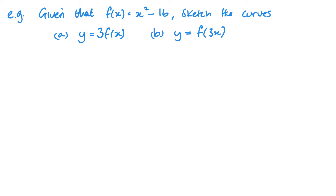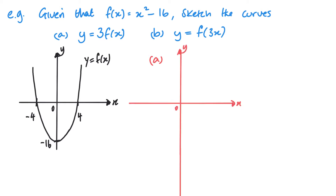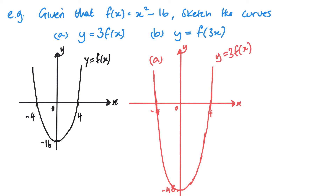Let's remind ourselves what the graph f of x equals x squared minus 16 looks like. Now let's look at the first one, y equals 3 f of x. That means it's outside of f of x, so it is affecting my y values in the vertical direction, with scale factor 3. So I need to multiply all my y values by 3, but my x values remain untouched. What I end up with is a graph that still goes through minus 4 and positive 4. However, on the y axis, it will now hit negative 48, because all my y values have been multiplied by 3. So a sketch of my graph would look something like this.